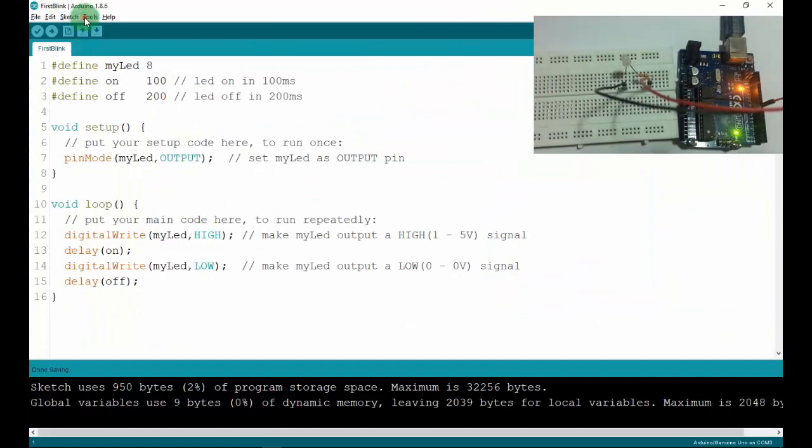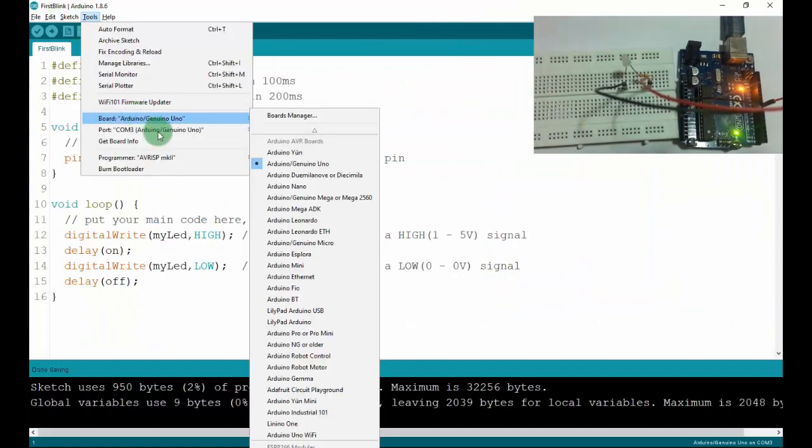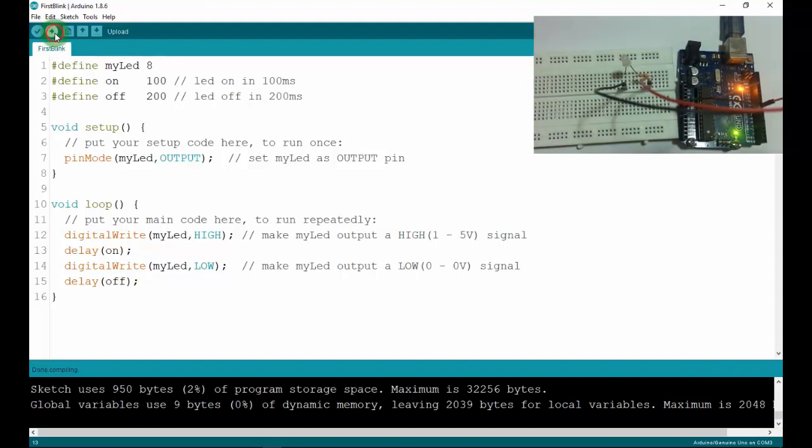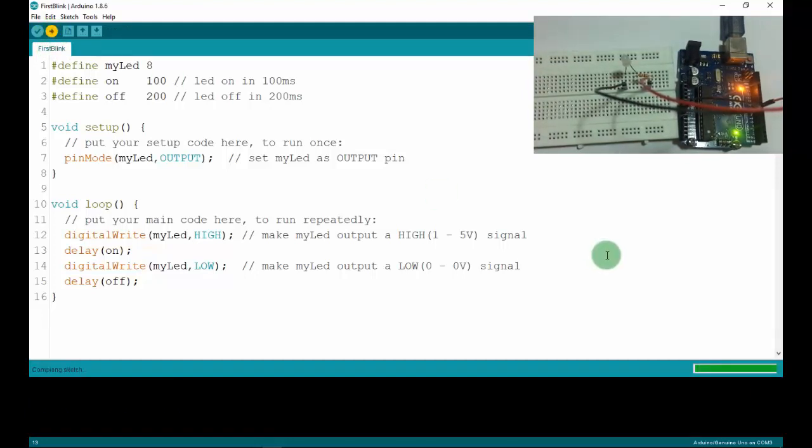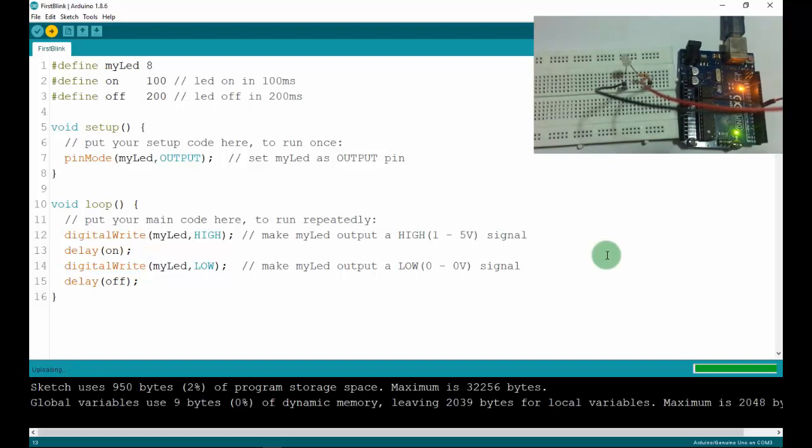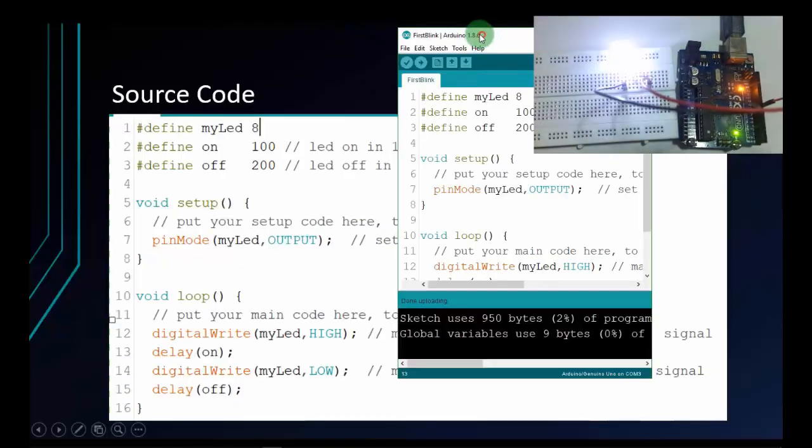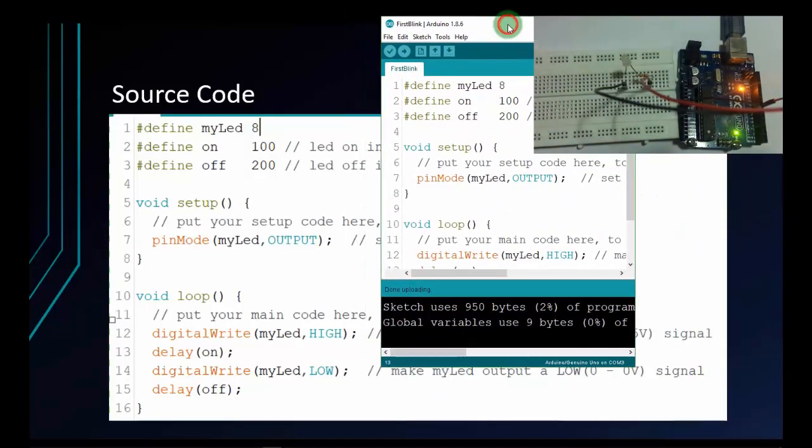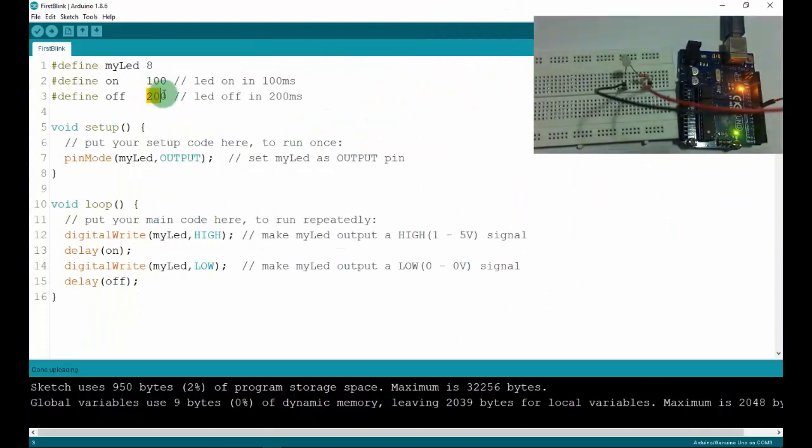This is my code. First, check the board, check the port. Verified. Now I'll upload the code. As you see, the LED is blinked. The LED is blinking like what you want. You can change some variables here to blink the LED faster or slower.